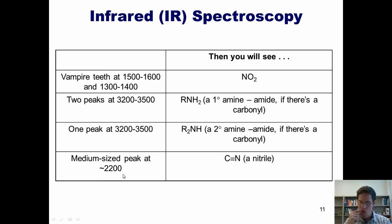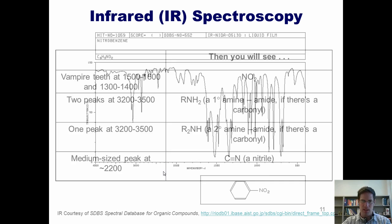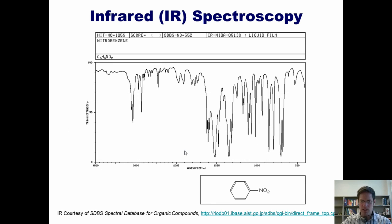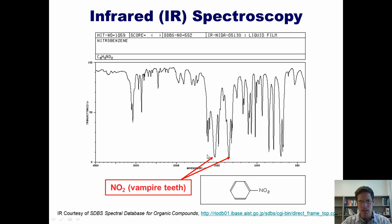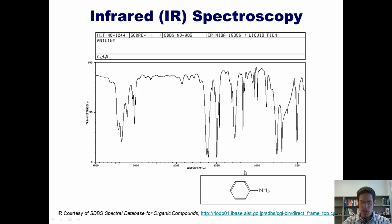Here is an IR of a nitro-containing compound, nitrobenzene. You can see two vampire teeth coming down — one around 1600 and one around 1400. That's indicative of an NO2.